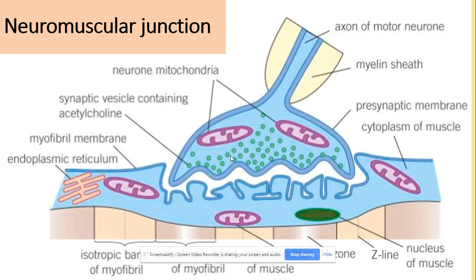Firstly we will be looking at the neuromuscular junction, because there is a difference between the depolarization arriving at the muscle and at another nerve cell. The process is quite similar. We've got the presynaptic membrane, and inside the presynaptic membrane we've got the vesicles that will contain acetylcholine. Rather than having the postsynaptic membrane, we've got the myofibril membrane, because the depolarization will arrive to the myofibril, to the muscles.